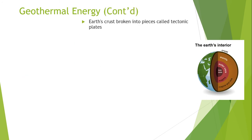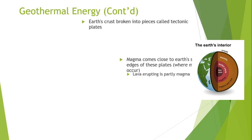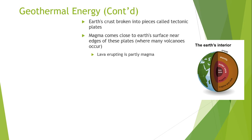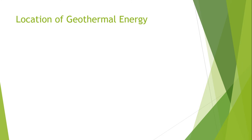The earth's crust is broken into pieces known as tectonic plates. By definition, tectonic plates are the pieces of earth's crust and uppermost mantle, and together they are known as earth's lithosphere. Magma comes close to the earth's surface near the edges of the plates, where many volcanic reactions occur and volcanoes erupt. Lava, rocks, and water absorb heat from magma that is deep underground, and that heat is the main source of geothermal energy.